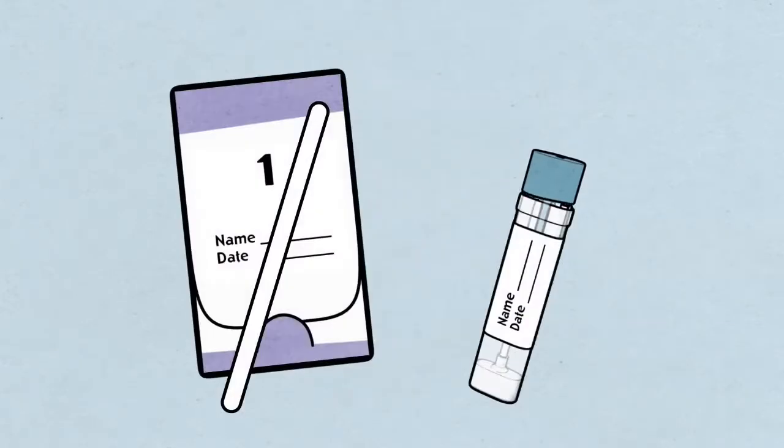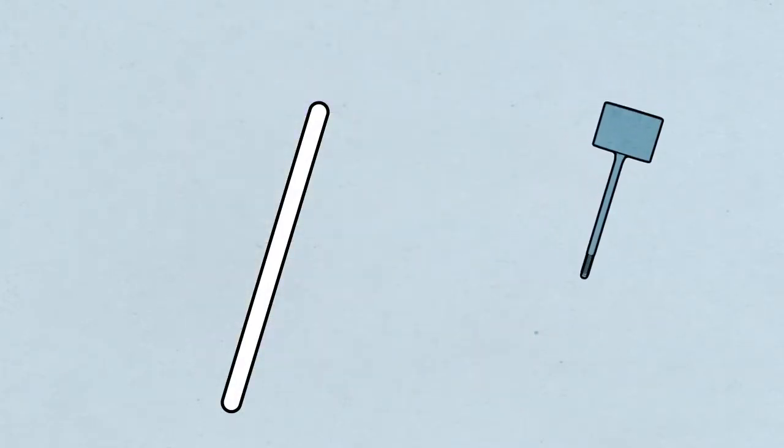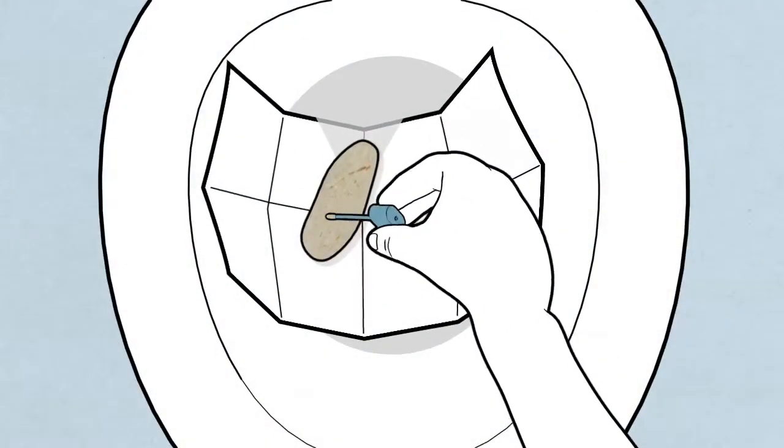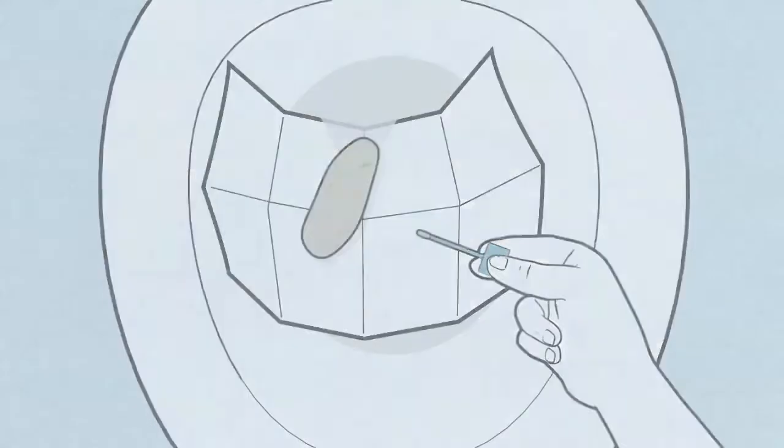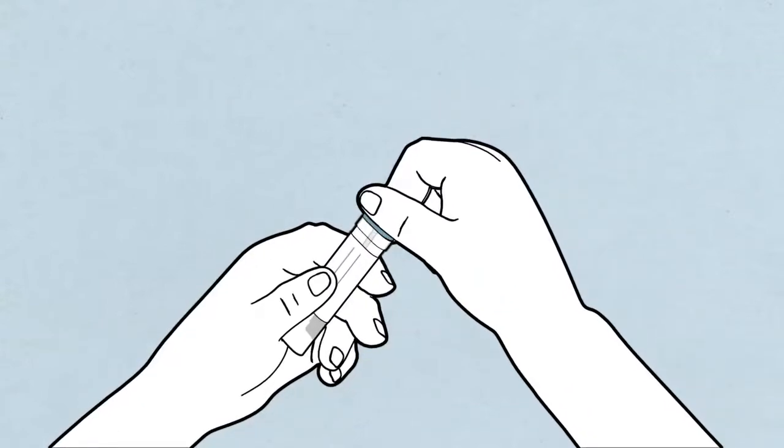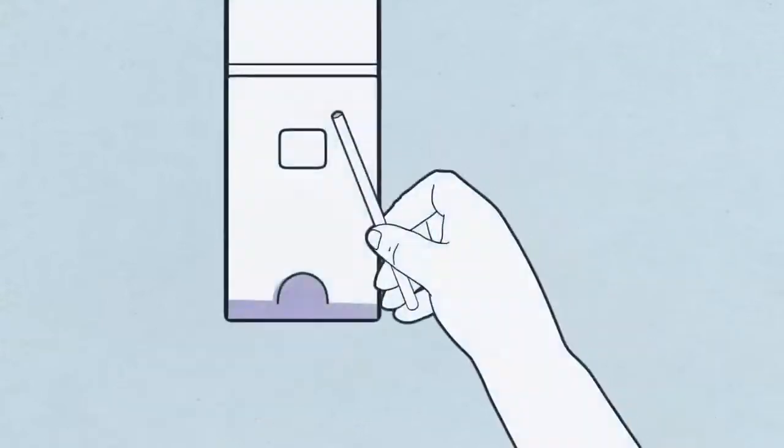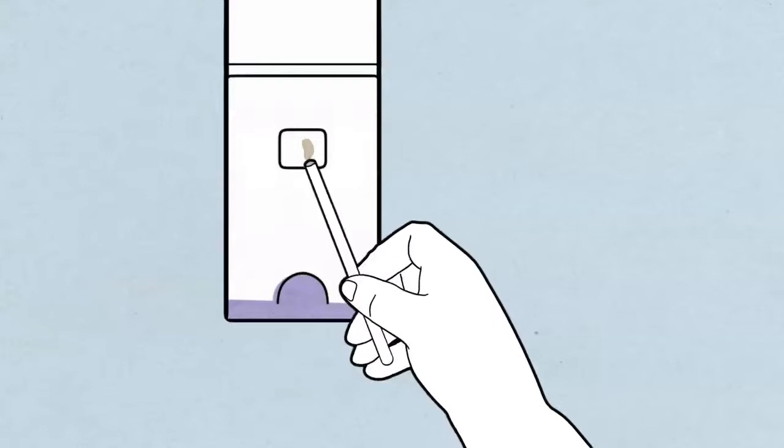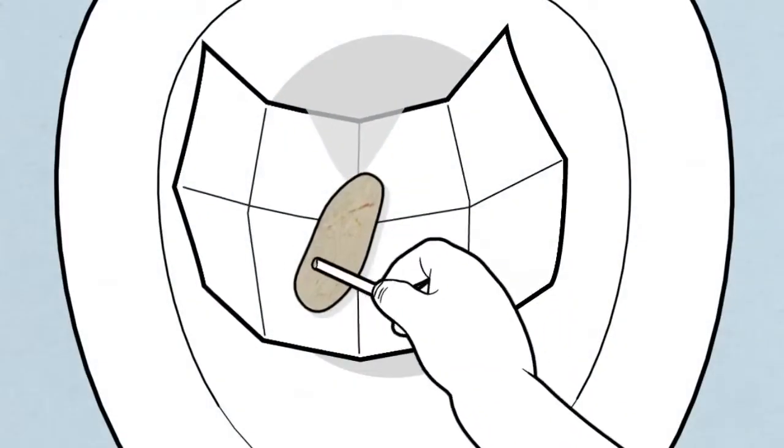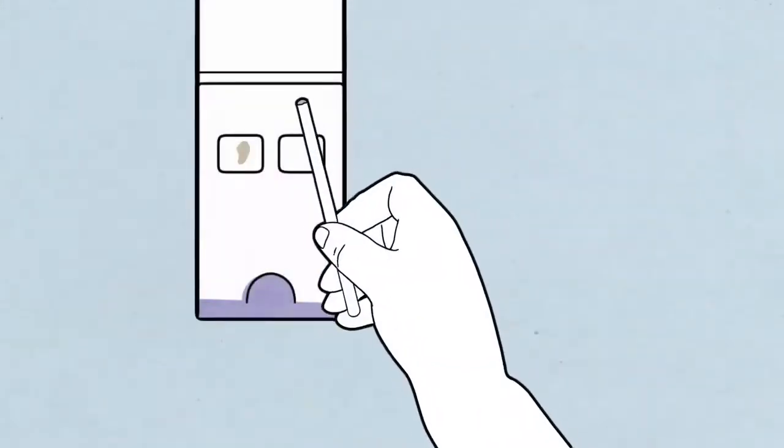Use the stick provided to collect a small sample from a part of the stool that hasn't contacted water. Add the sample to your bottle, or to the sample window inside your card. Some cards require two samples per bowel movement.